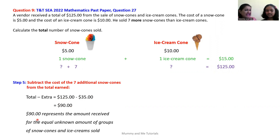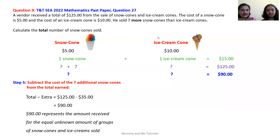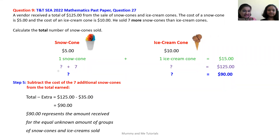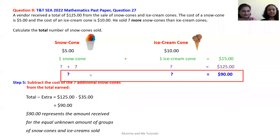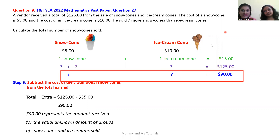This $90 represents the amount received for the equal unknown amount of groups of snow cones and ice cream sold. If the vendor did not sell the additional seven snow cones, then the vendor would earn $90 for an unknown amount of snow cones and an equal unknown amount of ice cream cones.